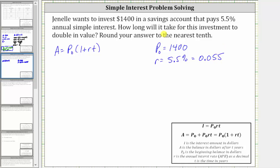She wants to know how long it will take for this investment to double, so the time T in years is unknown, but A, the account balance after T years, must be double 1,400.